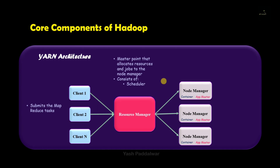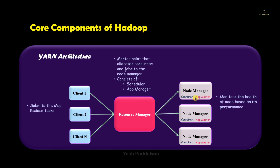The resource manager consists of a scheduler, which performs scheduling based on available resources. Note that the scheduler will only handle scheduling jobs — if a particular job fails, it is not the scheduler's duty to fix it. The next component inside the resource manager is the application manager, which is responsible for accepting tasks submitted by the client and allocating a container inside the node manager for them. The node manager is responsible for monitoring and managing all the nodes inside it.